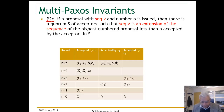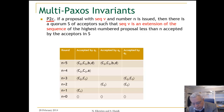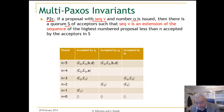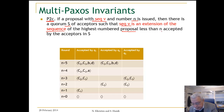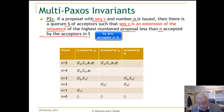Here is our basic invariant. It says: if a proposal with sequence V and number N is issued, then there is a quorum S of acceptors such that V is an extension of the sequence of the highest number proposal less than N accepted by all acceptors in S. Note that when we say a quorum, we mean a majority set.